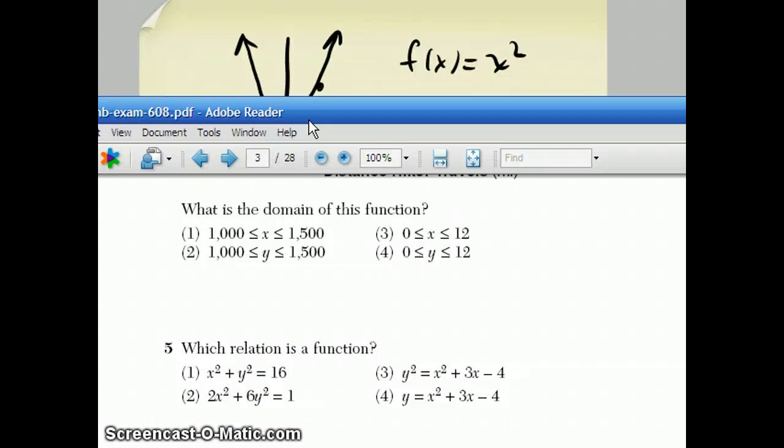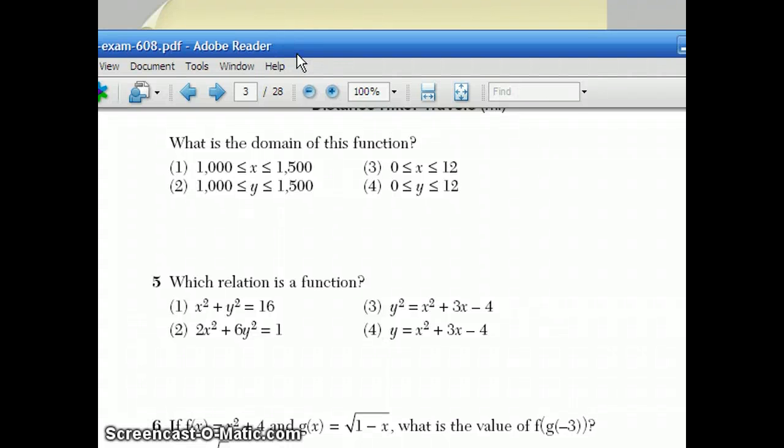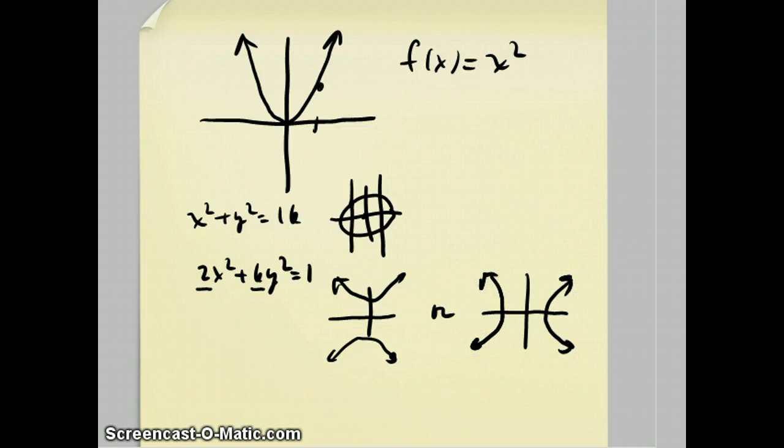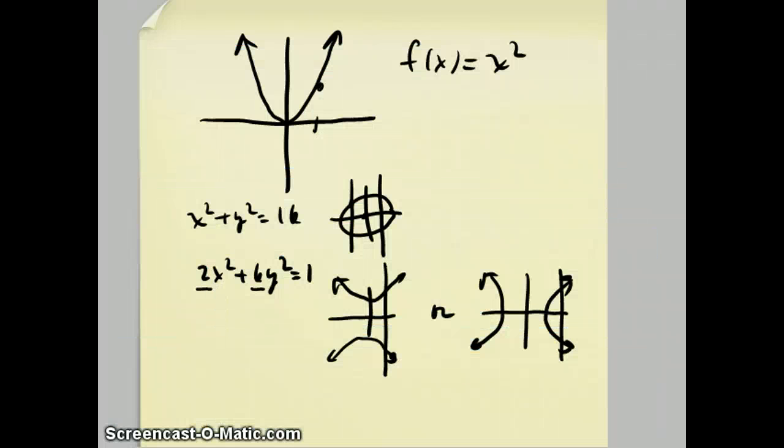The third choice, y^2 = x^2 + 3x - 4. This one is actually going to be a hyperbola. If you move everything over to one side, you'll have a positive y^2 and a negative x^2. And when you graph that, that will become some kind of hyperbola. Those kinds of hyperbolas look either like this or sometimes they look like this. Either way, they fail the vertical line test. The only choice left is choice 4. And choice 4 is quadratic. The graph is a parabola. And parabolas do pass the vertical line test. And that's why this one is the graph of a function.